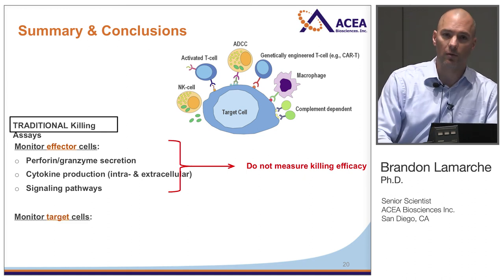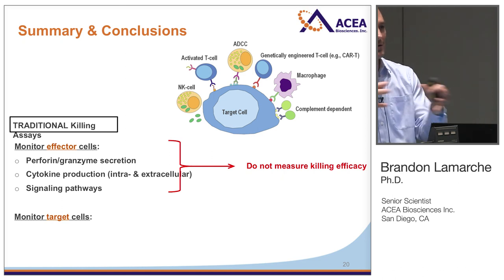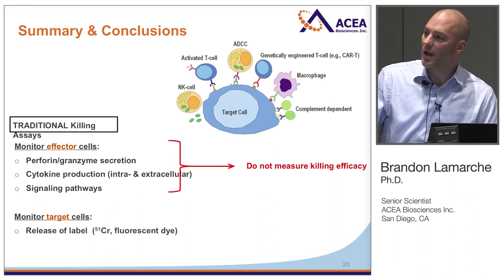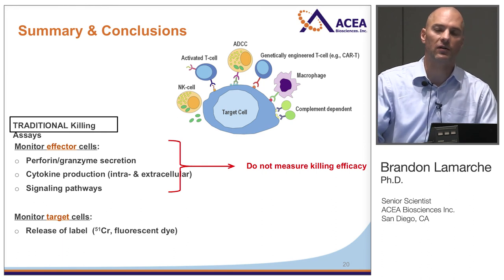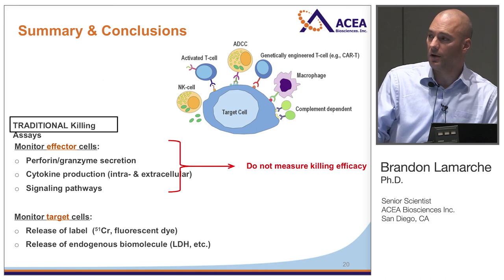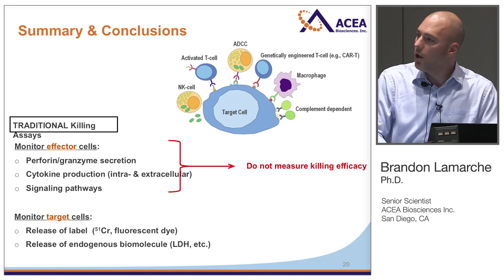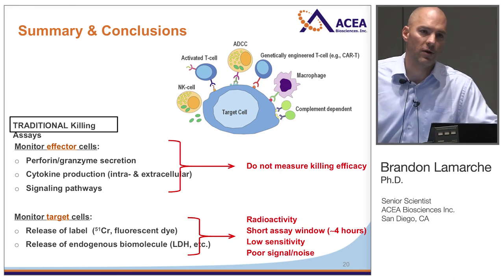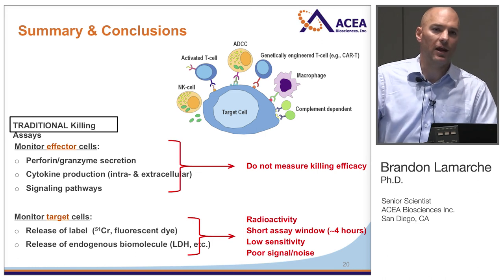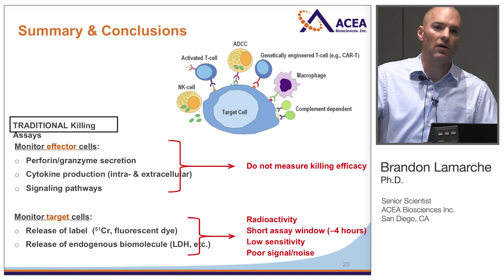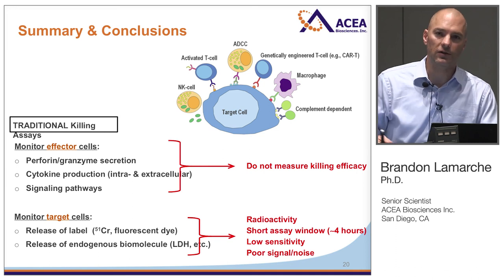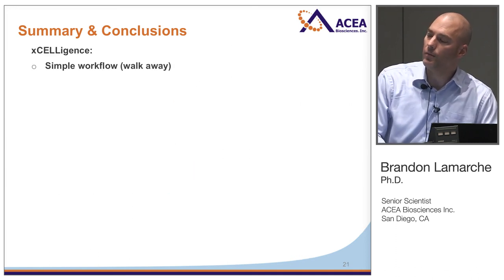If we're monitoring what's happening with target cells, the basic assay is a release assay: when the target cell gets lysed, its contents are spilled into the media for analysis. One type is chromium-51 or a fluorescent dye added to the cell ahead of time; alternatives look at the release of endogenous biomolecules like LDH. Problems with these include dealing with radioactivity, very short assay windows — chromium-51 gives four to eight hours at most — whereas with the Excelligence assay you can run it for four days without any problem.